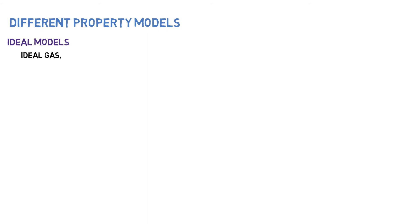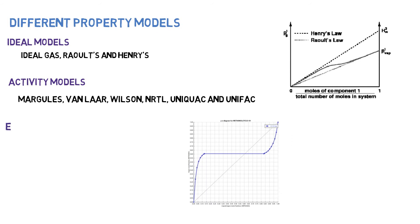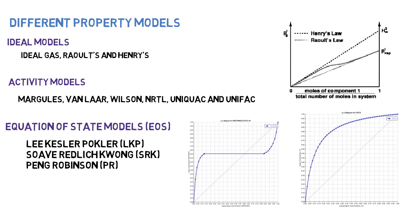We cover the different property models, such as the ideal model, the activity coefficient models such as Wilson, NRTL, and UNIFAC, and the equation of state models such as Peng-Robinson, Lee-Kessler, and Pitzer.